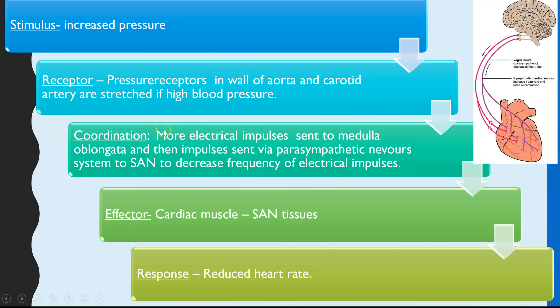The most common reason people miss marks is failing to state that it's more electrical impulses going to the medulla oblongata, and more impulses going along the parasympathetic nervous system. You will continually have impulses, but you'll only get a change in response if you have more impulses — so you must include the word 'more' in your answer.